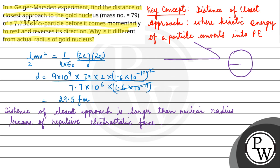So this is the distance of closest approach where your entire kinetic energy converts to potential energy, and that is why the distance of closest approach is larger than the nuclear radii. I hope you understood in chapter 12.